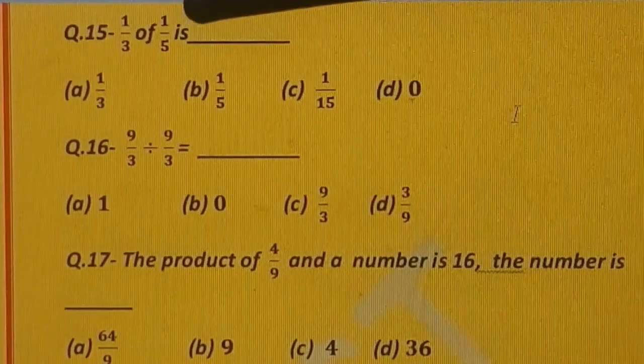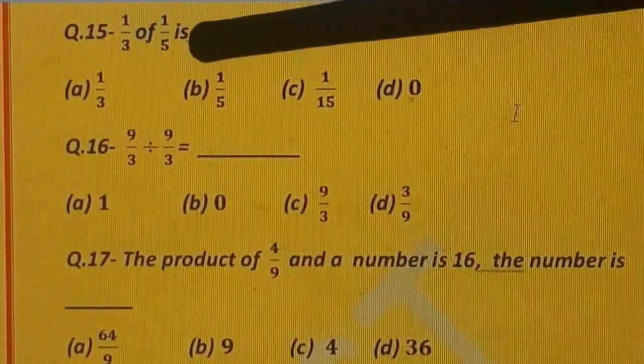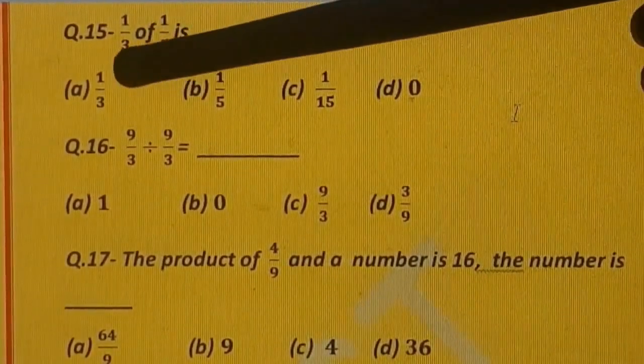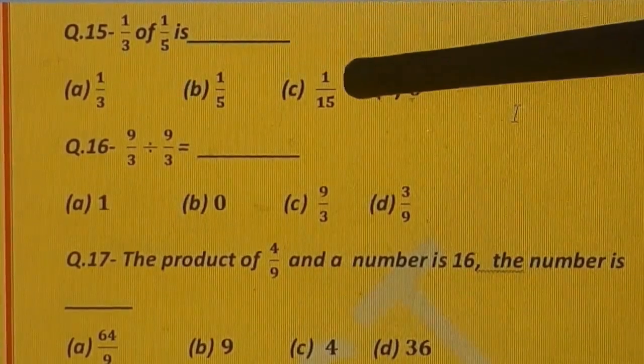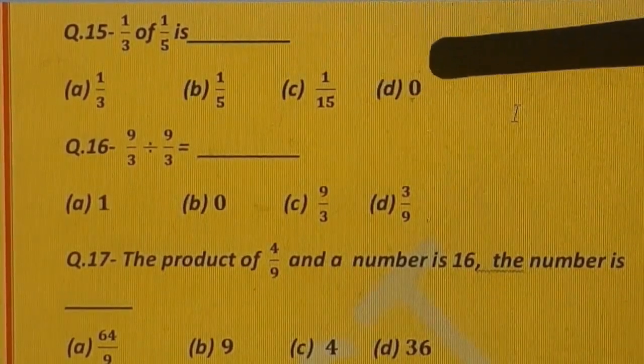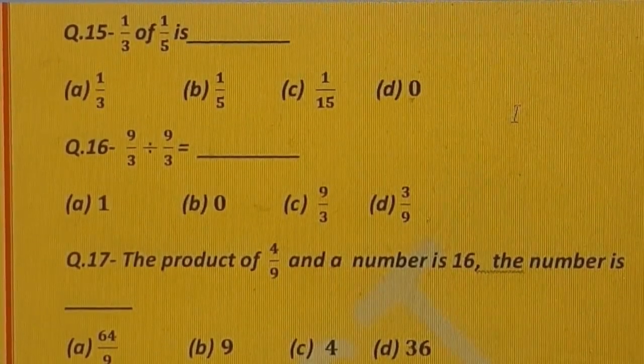Question number 15. 1 upon 3 of 1 upon 5 is dash. Options are: A) 1 upon 3, B) 1 upon 5, C) 1 upon 15, and D) 0.